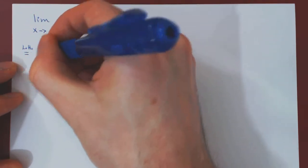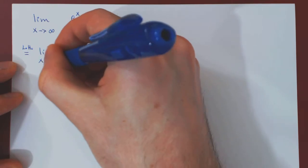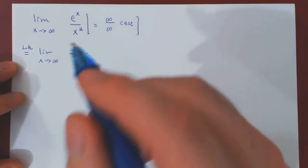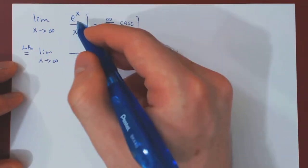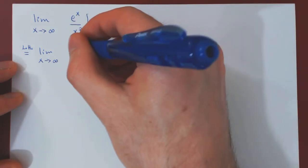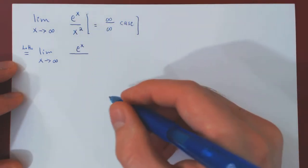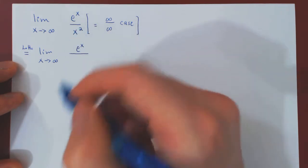Limit stays the same, so x is approaching infinity. So we replace e to the x by its derivative, but the derivative of e to the x is itself e to the x. So this does not change, the derivative of x squared is 2x.